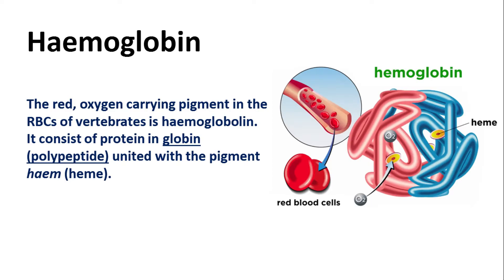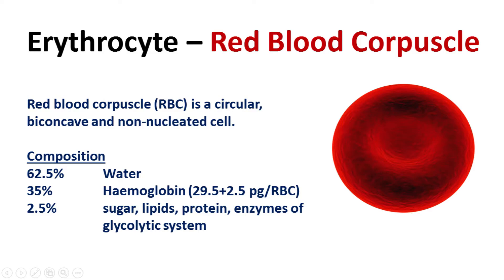Plasma also contains nutrients like amino acids, carbohydrates, vitamins, and fatty acids. Hemoglobin is the red-colored, oxygen-carrying pigment that imparts red color to the blood; it is made up of a polypeptide chain and the heme protein. Erythrocytes, also known as RBCs or red blood cells, comprise about 45 percent of total blood volume. These are circular, biconcave, and non-nucleated cells, but juvenile RBCs do contain a nucleus. RBCs contain 62.5 percent water, 35 percent hemoglobin, and 2.5 percent sugar, lipids, proteins, and enzymes of the glycolytic system.